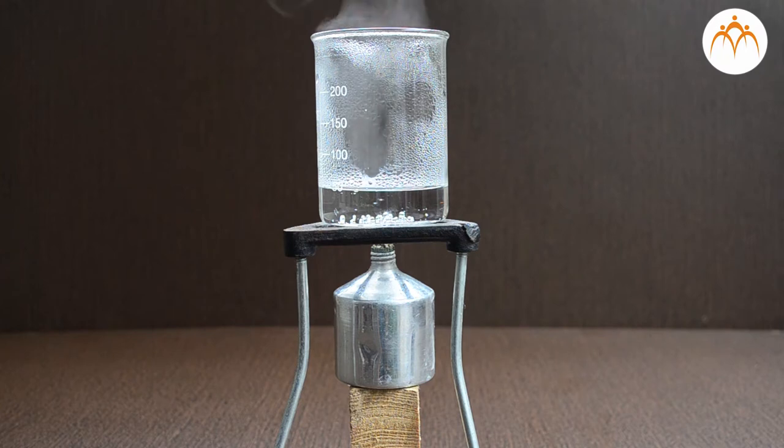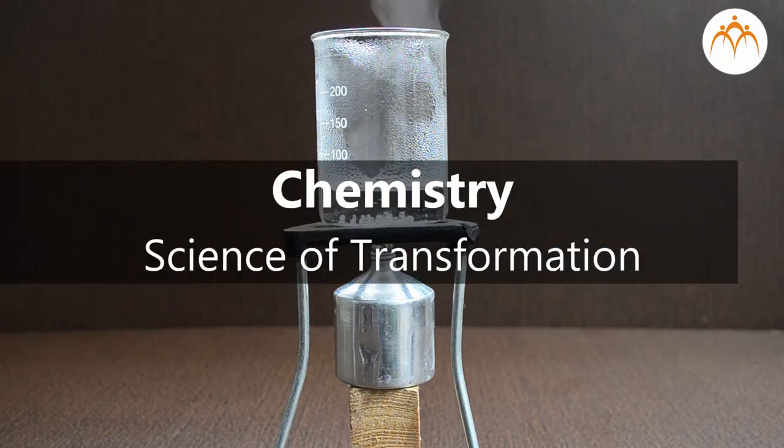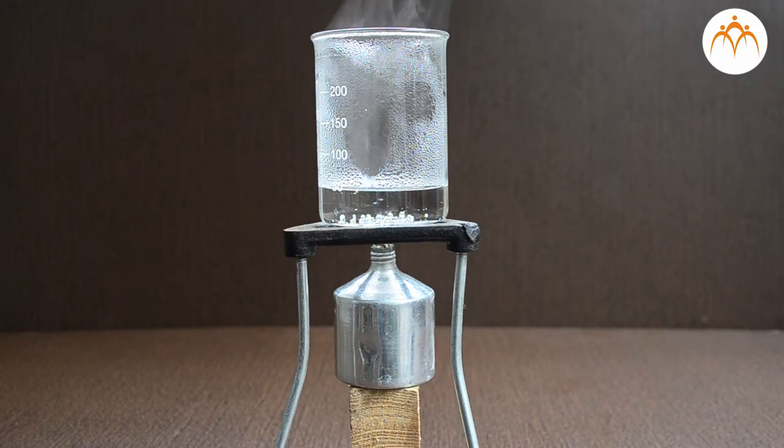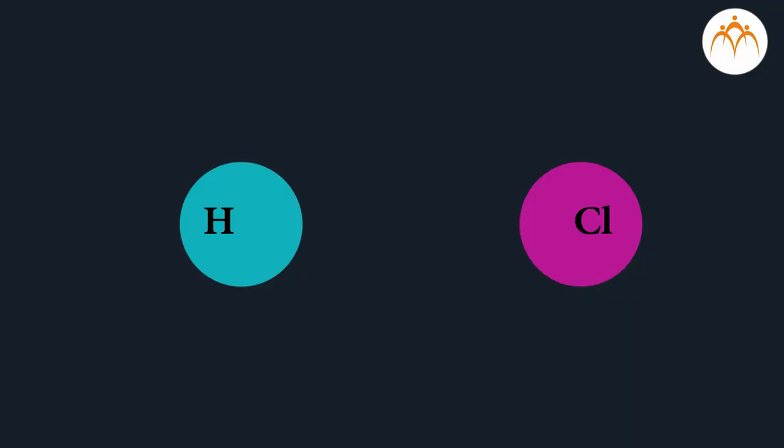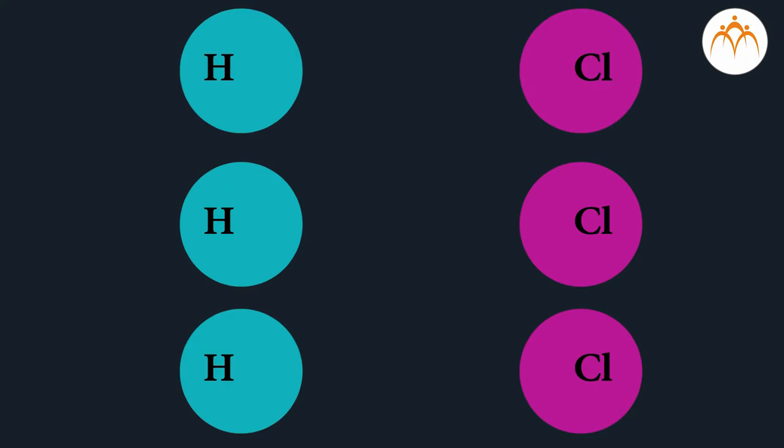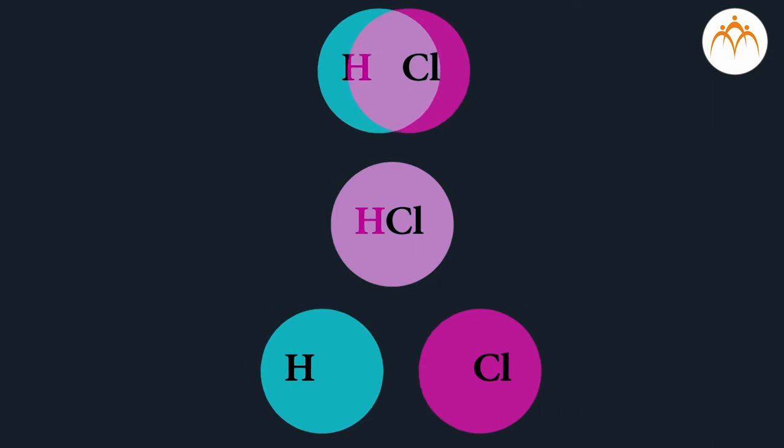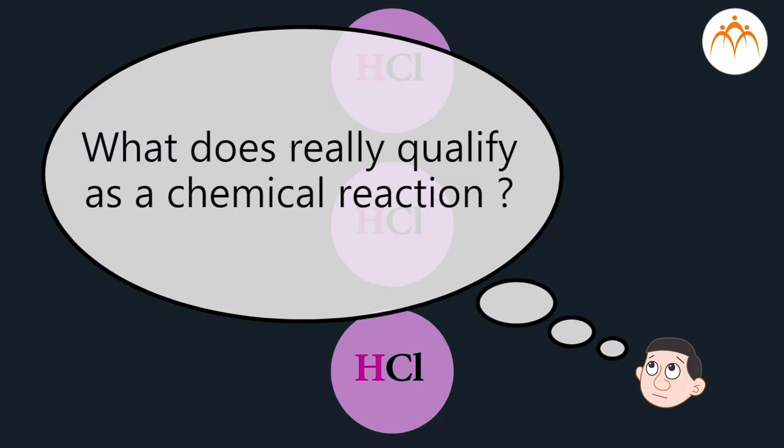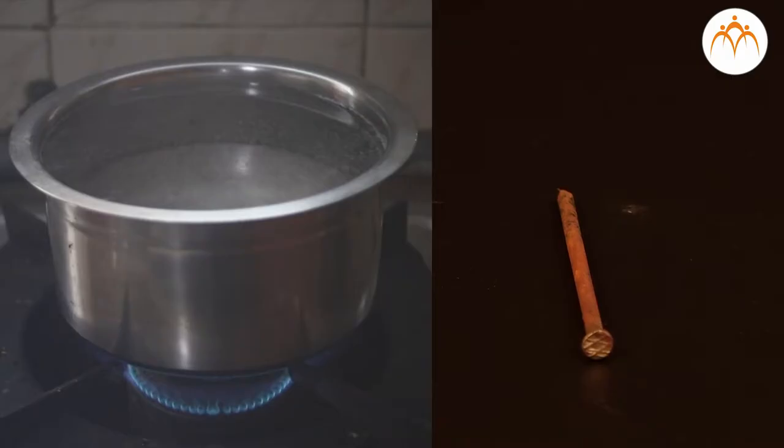Scientists have always perceived chemistry as a science of transformation. How things react and form new compounds has always been an interesting puzzle for scientists. You must have known that when a chemical reaction happens, the initial reactants transform to form new compounds. But what does really qualify as a chemical reaction? Let us take an example.